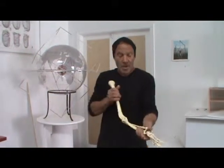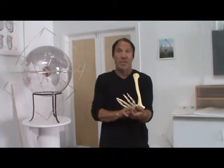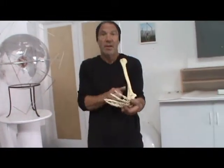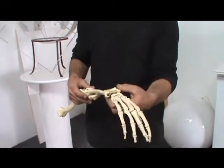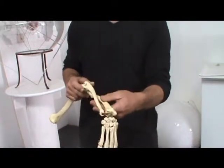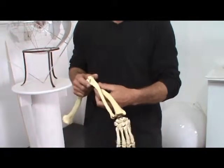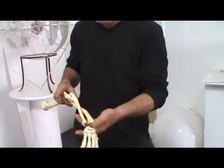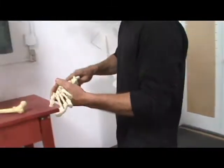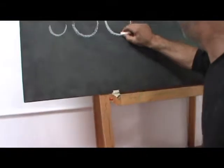Then he says the third interval has to do with these two bones — and you see there are two of them. Rudolf Steiner describes the major and minor third, and this is how we build chords using a major and minor third. So what does he do? He makes a bigger scallop.